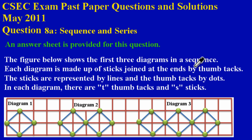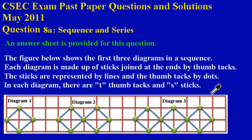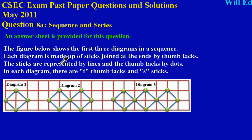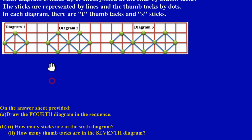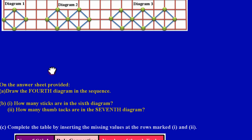The figure below shows the first three diagrams in a sequence. Each diagram is made up of sticks joined at the ends by thumbtacks. The sticks are represented by lines and the thumbtacks by dots. In each diagram there are T thumbtacks and S sticks.